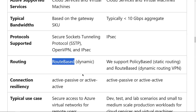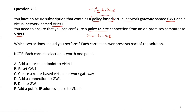Let's go back to the question. Since the existing virtual network gateway GW1 is policy-based, we will have to delete it first — that is the first action. Then we will create a route-based virtual network gateway. Only then will we be able to configure a point-to-site connection from an on-premises computer to VNet1. So option E and option C are the correct answers.